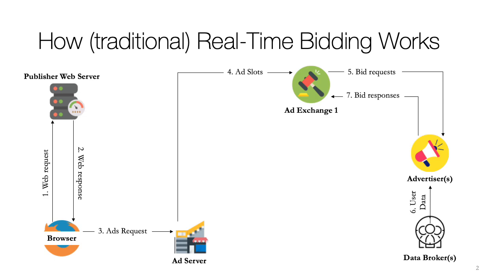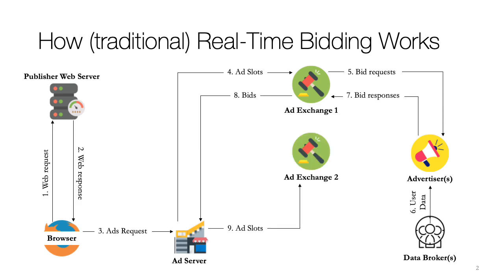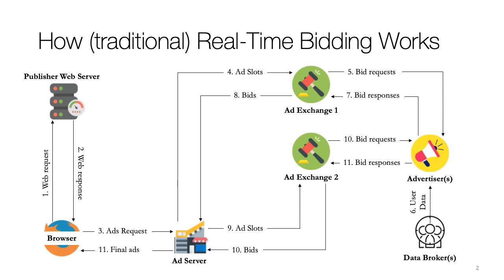Once the auction is finished, these bids will then be forwarded to the ad server. At this point, the ad server may decide that it has received a high enough bid and terminate the process, or it may decide to contact another ad exchange based on the publisher's policy. At this new ad exchange, a new auction will be triggered, and similarly advertisers will be requested for bids and they will send bids back. At the end of the auction, these bids will be forwarded to the ad server. At the end of the entire thing, the ad server will decide which bids win and the winning final ad will be sent back to the browser.